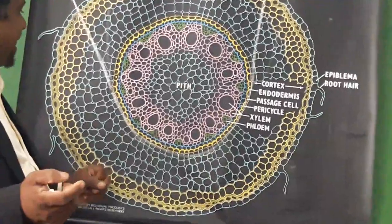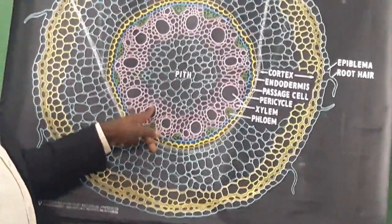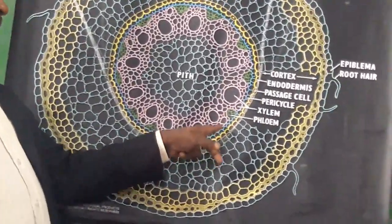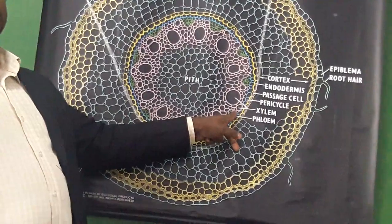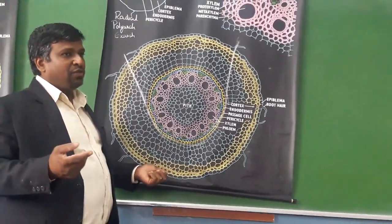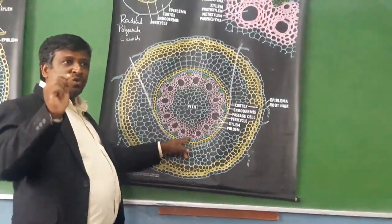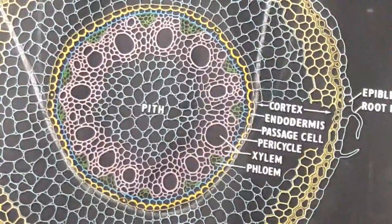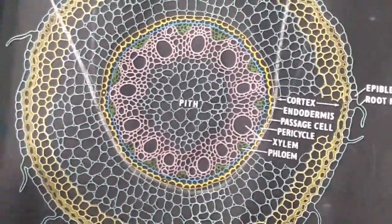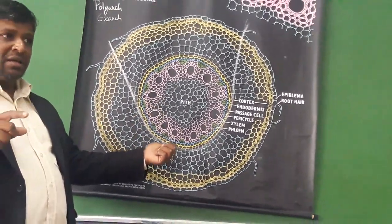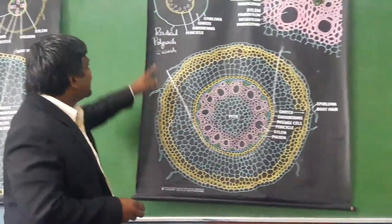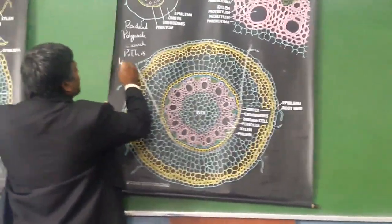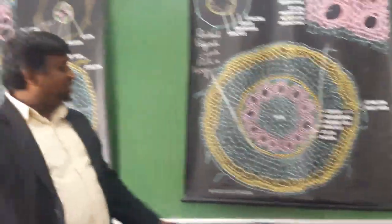The next layer is the pericycle — a single-layered pericycle. You can notice the proto-xylem and meta-xylem. There are many elements of proto-xylem and meta-xylem. The small green-colored patches alternating with xylem are phloem, containing sieve tubes, companion cells, phloem parenchyma, and phloem fibers. There are many patches of xylem alternating with phloem, which is why this stele is called a radial vascular pattern, polyarch and exarch. The pith is very large in the monocot root.